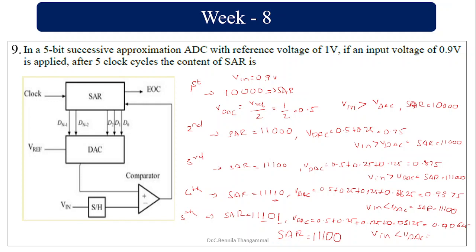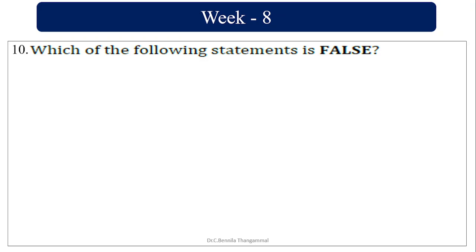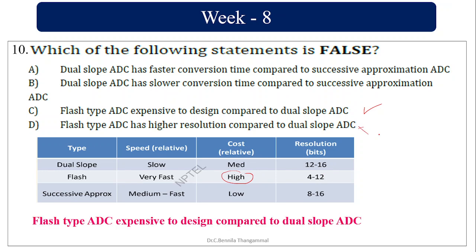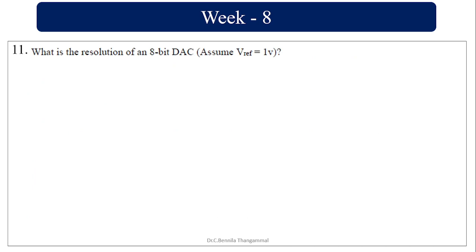At the end of the fifth cycle, SAR content is 1, 1, 1, 0, 0. Which of the following statements is false? Dual slope ADC has faster conversion — that is false, it is actually very slow. Dual slope has a slower conversion rate compared to successive approximation — also wrong as stated. Flash ADC is expensive — that is correct and true.